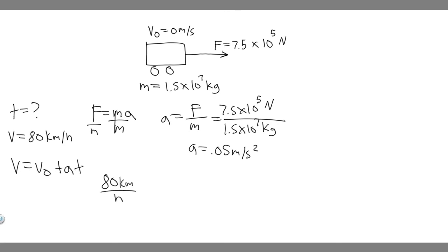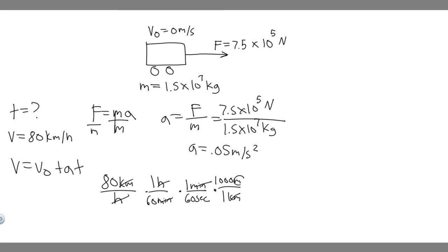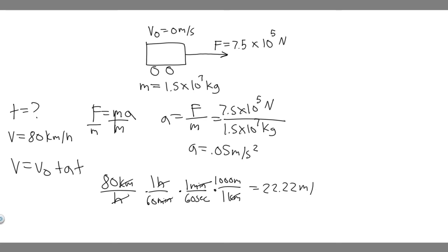Let's convert 80 kilometers per hour. We know there's one hour for every 60 minutes, so dividing by 60 cancels the hours. Then there's one minute for every 60 seconds, which cancels the minutes, leaving kilometers per second. For every one kilometer there are 1,000 meters, so multiplying by 1,000 cancels the kilometers, giving meters per second. So do 80 times 1,000 divided by 3,600 — since 60 times 60 is 3,600 — and you get 22.22 meters per second.